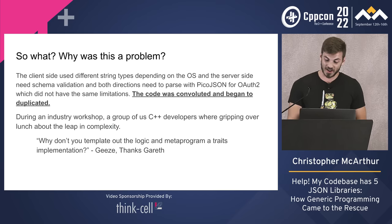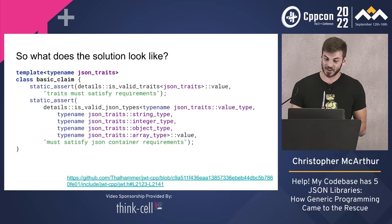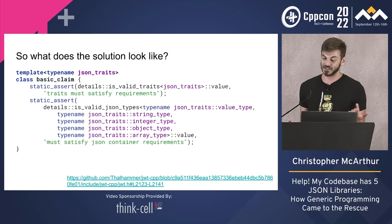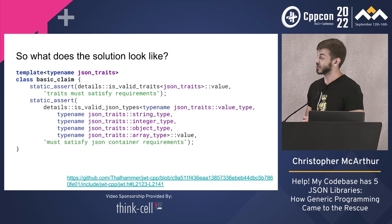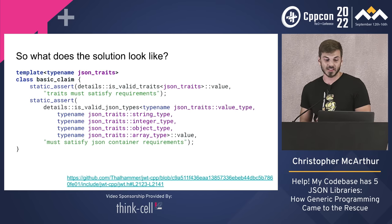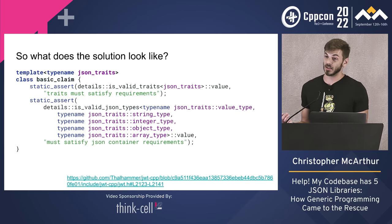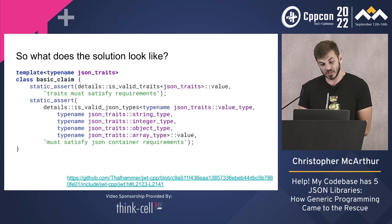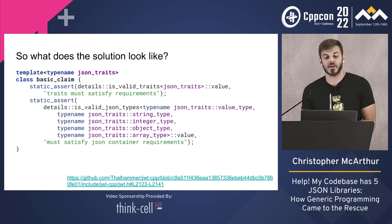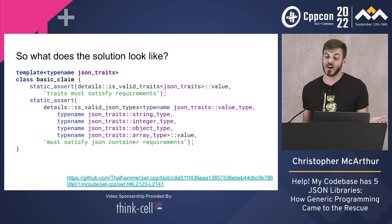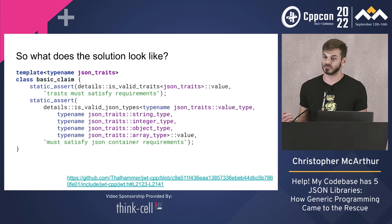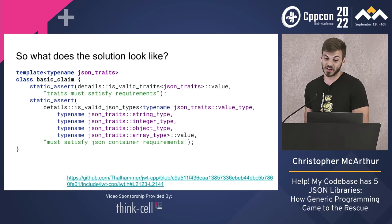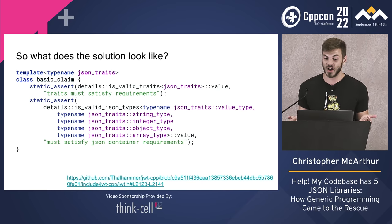So what does the solution look like? This is it. This is a templated class called basic_claim, and it takes the JSON traits. You can notice there are two static asserts: is_valid_traits and is_valid_JSON_types.